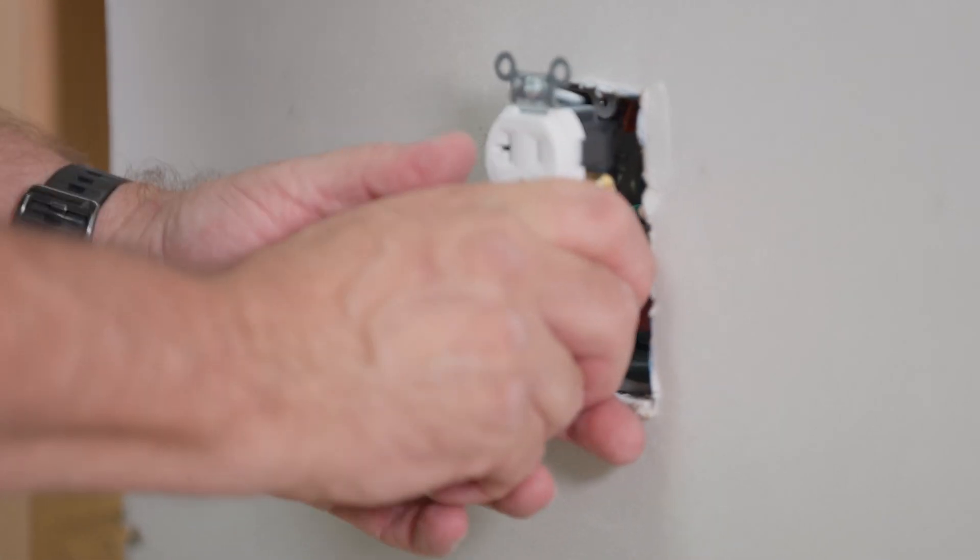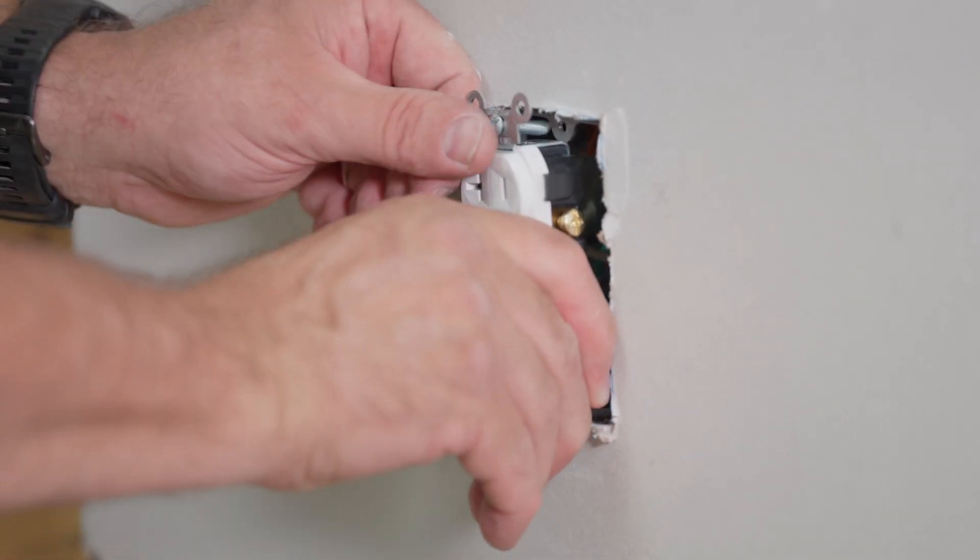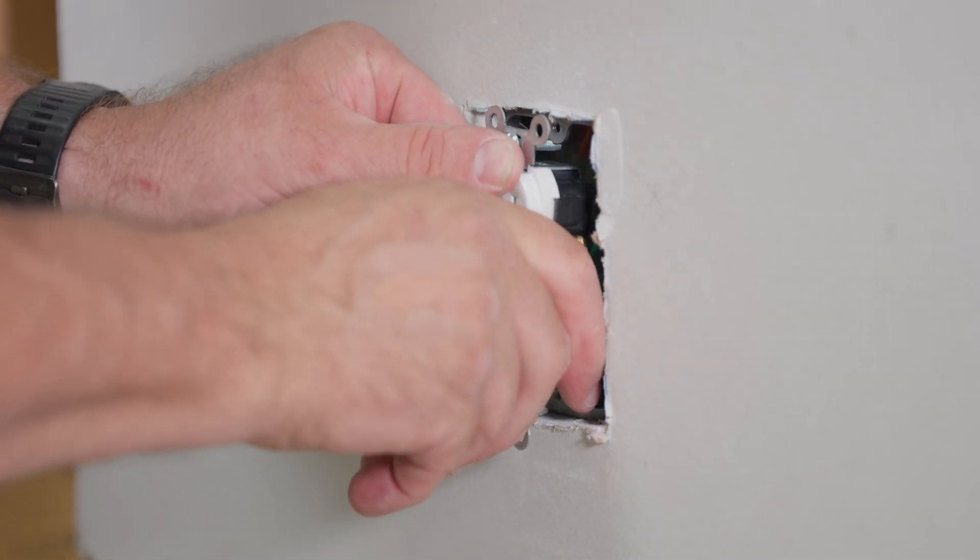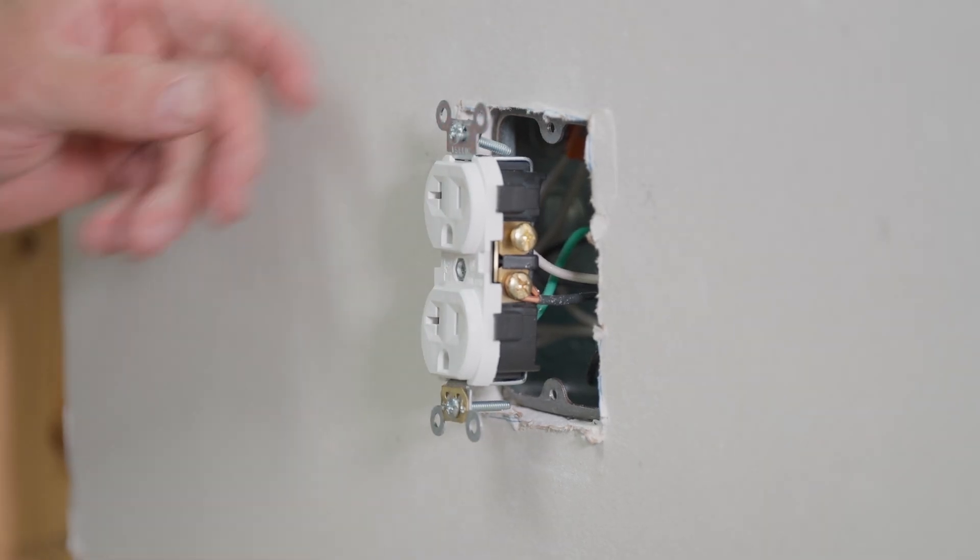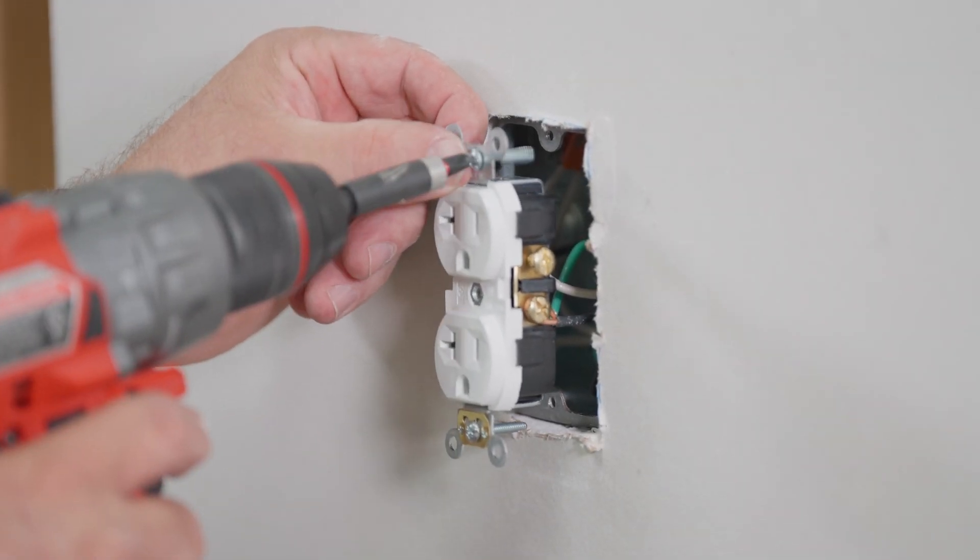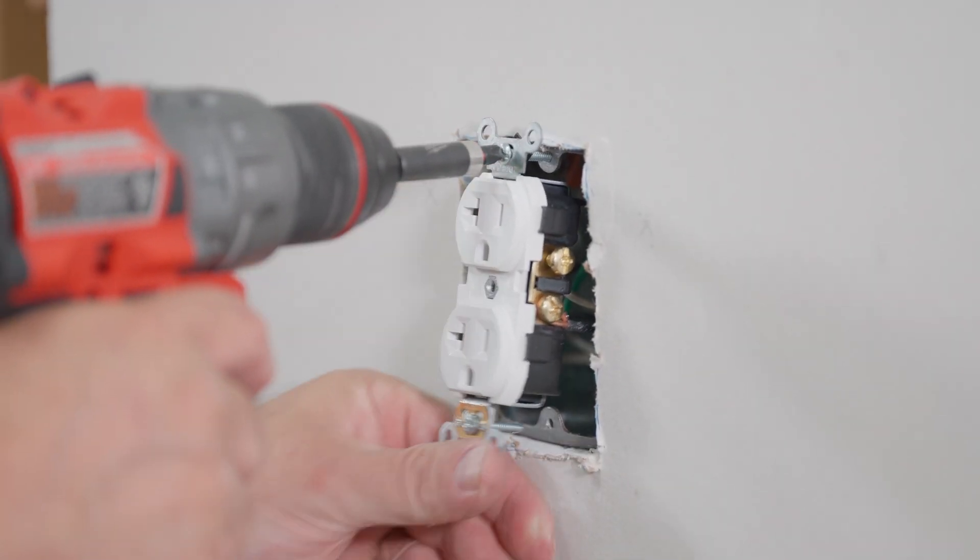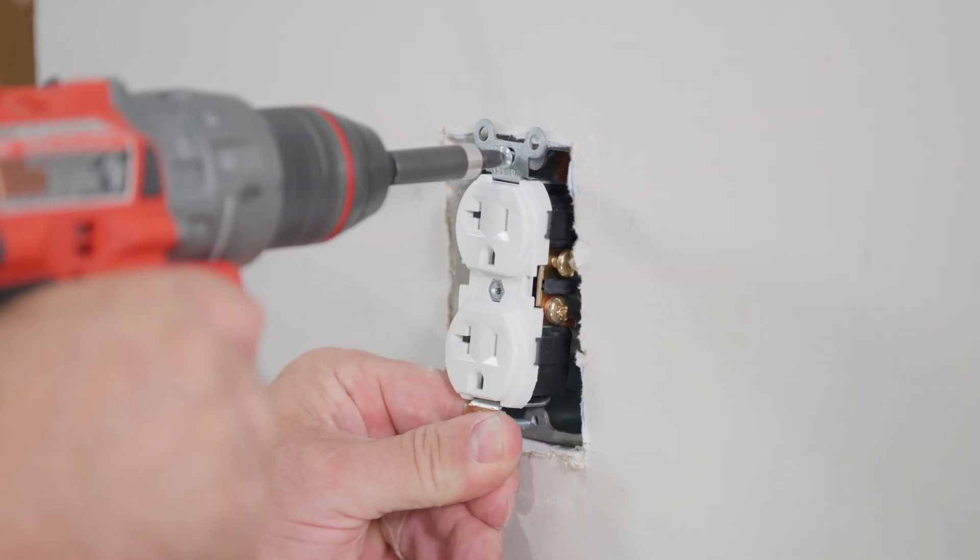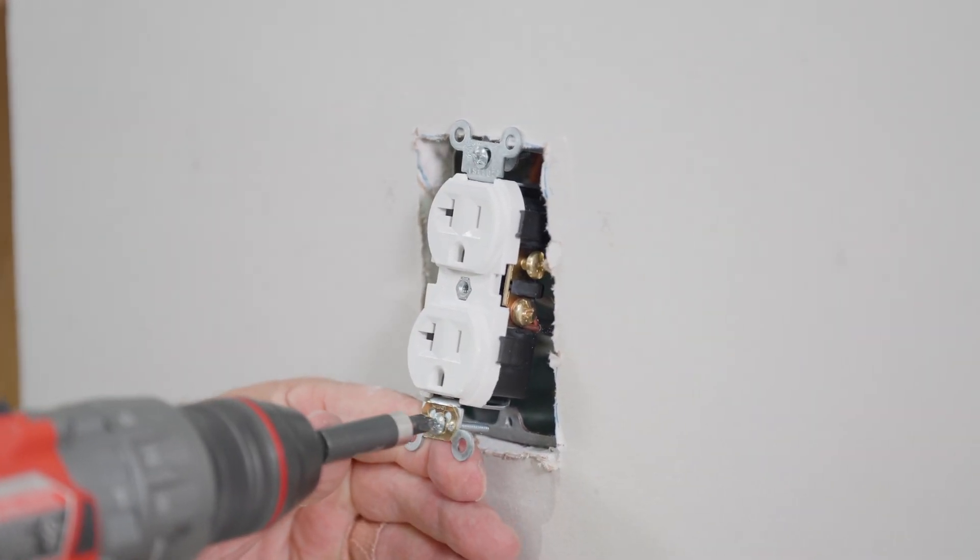We're going to push the wires back. You want them to go straight back in the box. You don't want them to be next to the edge. Push it all the way back. And then what we'll do is attach this receptacle and screw it in. There you go.